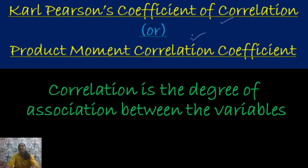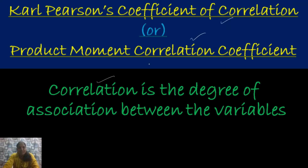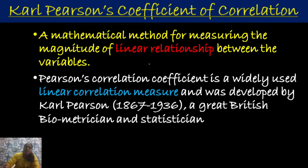You know already, correlation is the degree of relationship between the two variables. Based on correlation, we have to measure both the direction and the strength of the relationship between the two variables — that is, the extent to which the two variables are related to each other. Also, it is one of the mathematical methods for measuring the linear relationship between the variables. So here we have to discuss about the linear case, not about the non-linear case.